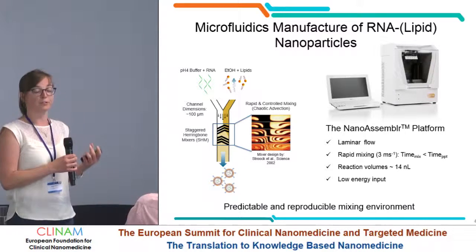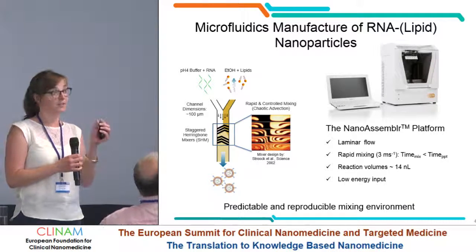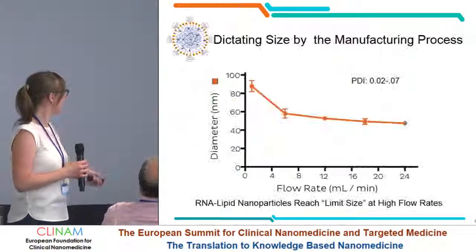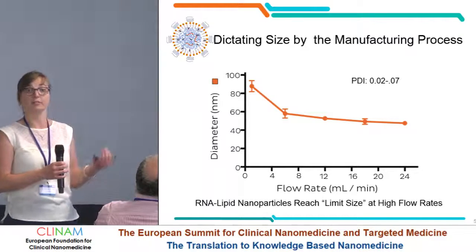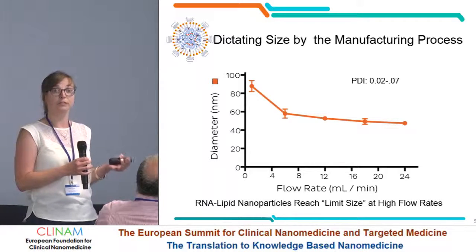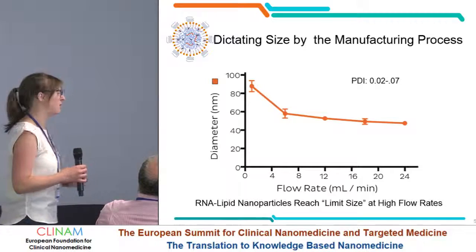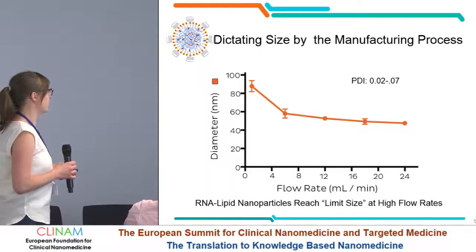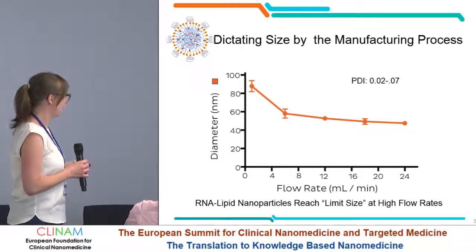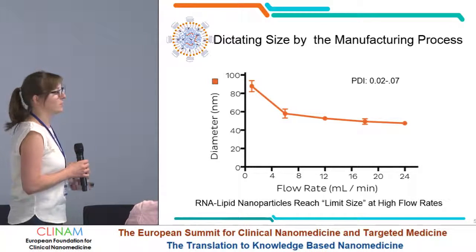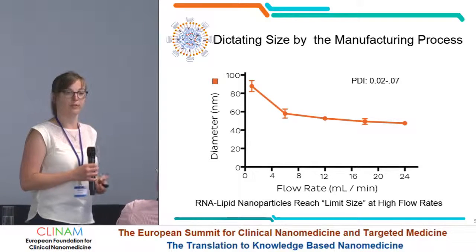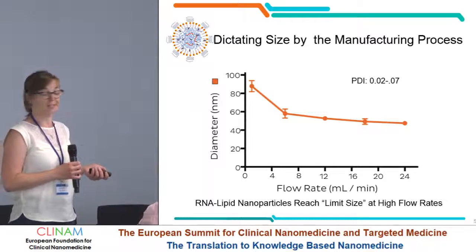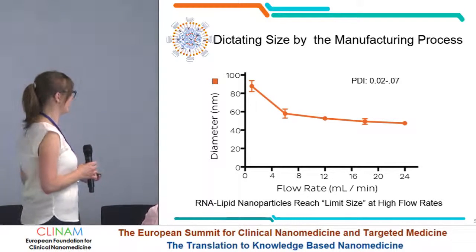This allows us to produce particles in a very defined way. We can define the particle size by using different parameters — different ratios of the fluids or different flow speeds in the microfluidic channel — and tune nanoparticles by their size. We can also influence polydispersity, getting down to a polydispersity index of 0.02, which is quite a nice achievement.